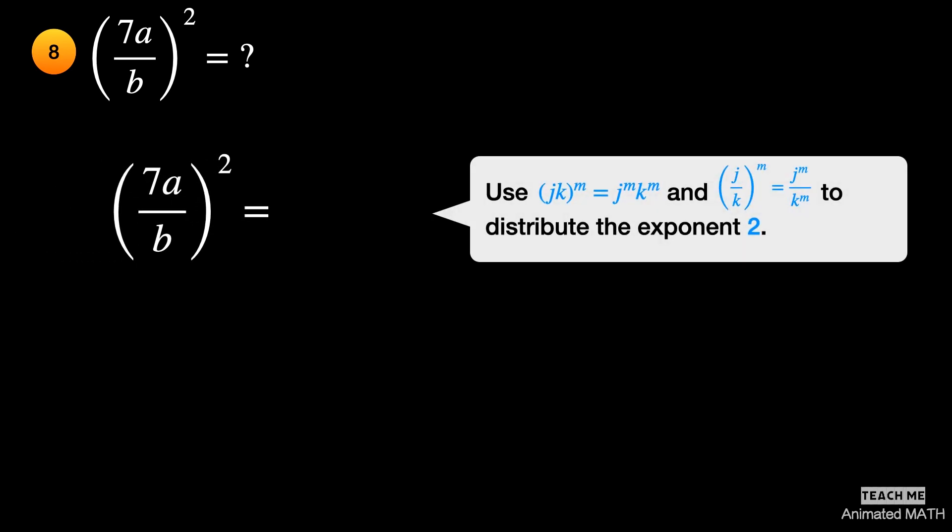Use the 8th and 9th properties to distribute the exponent 2 to all bases inside the parenthesis. The final answer is 49 a squared over b squared.